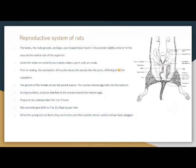Reproductive system of rats. The testes, the male gonads, are large oval-shaped lobes found in the scrotum, slightly interior to the anus on the ventral side. The testes contain tubules where sperm cells are made. Prior to mating, contraction of muscles moves the baculum into the penis, stiffening it for copulation. The gonads of female rats are the paired ovaries, which release egg cells into the oviduct. During ovulation, oviducts attached to the ovaries receive the mature eggs. Pregnant rats undergo labor for one to two hours and normally give birth to seven to twelve offspring per litter. When the young rats are born, they are hairless and their eyes remain sealed and ear ducts plugged.